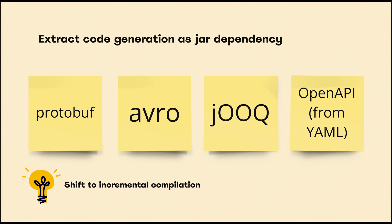Modularization not only gives you better domain and ownership boundaries but also provides a performance boost. With more granular modules, your build cache can also be more efficient. This also makes sense if you're using code generation — I recommend extracting it to external libraries, especially for tools like Protobuf, Avro, or JOOQ which consume static files like SQL or proto files and generate sources. There's a disadvantage: if you generate model classes and compile them, IntelliJ IDEA won't recognize this as incremental compilation because it's built by Maven, so it recompiles everything. If you extract it to libraries, you can fully shift to incremental compilation in IntelliJ.